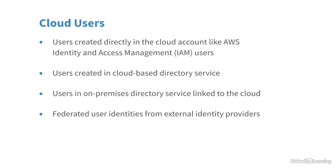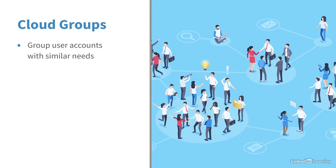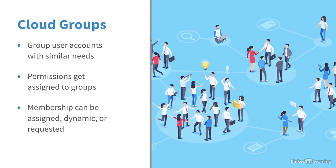It's also important to think about organizing users into groups. The idea is to group user accounts with similar needs and assign permissions to the groups — it's much easier to manage, especially at scale, than assigning permissions to every individual user. Group membership can be assigned manually, or it can be dynamic — where the group is configured with expressions that look at user account attributes to determine group membership. For example, a dynamic group expression might specify that if City equals Milan, those users become members of the group. Users can also request to join a group to enjoy its privileges.